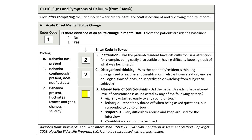What is the correct code for C-1310D – Altered Level of Consciousness? The options are: 0 – Behavior Not Present; 1 – Behavior Continuously Present, Does Not Fluctuate; 2 – Behavior Present, Fluctuates. The correct code for C-1310D – Altered Level of Consciousness would be 0, Behavior Not Present. Mr. Miller did not demonstrate any symptoms of vigilance, lethargy, stupor, or comatose behaviors during the assessment.